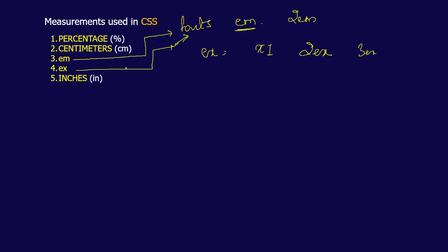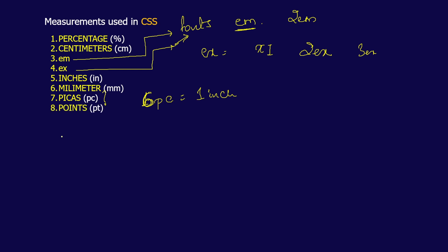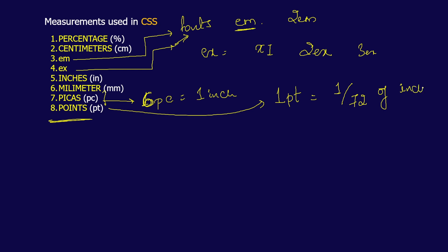The next one is inches — we all know what inches are. Next is millimeters, another well-known measurement. Then you have picas: six picas equals one inch, so in one inch you have six picas. Next is point — one point is equal to 1/72 of an inch, so that is the measurement for a point.